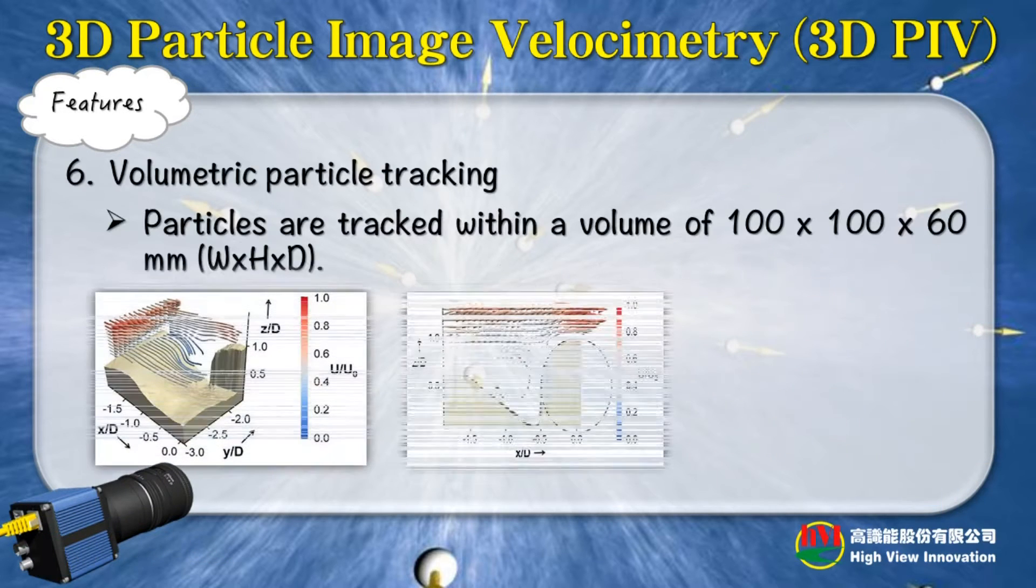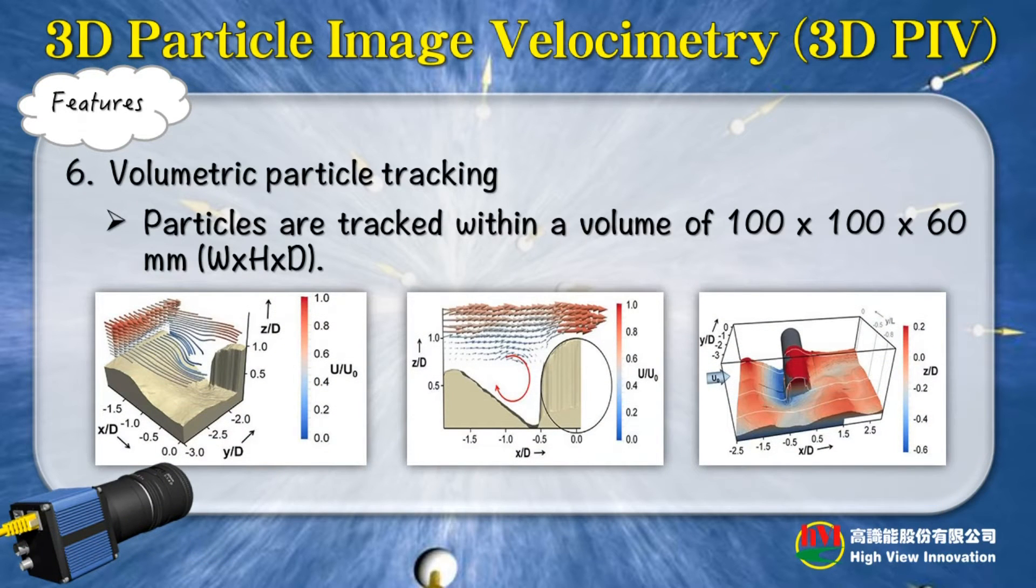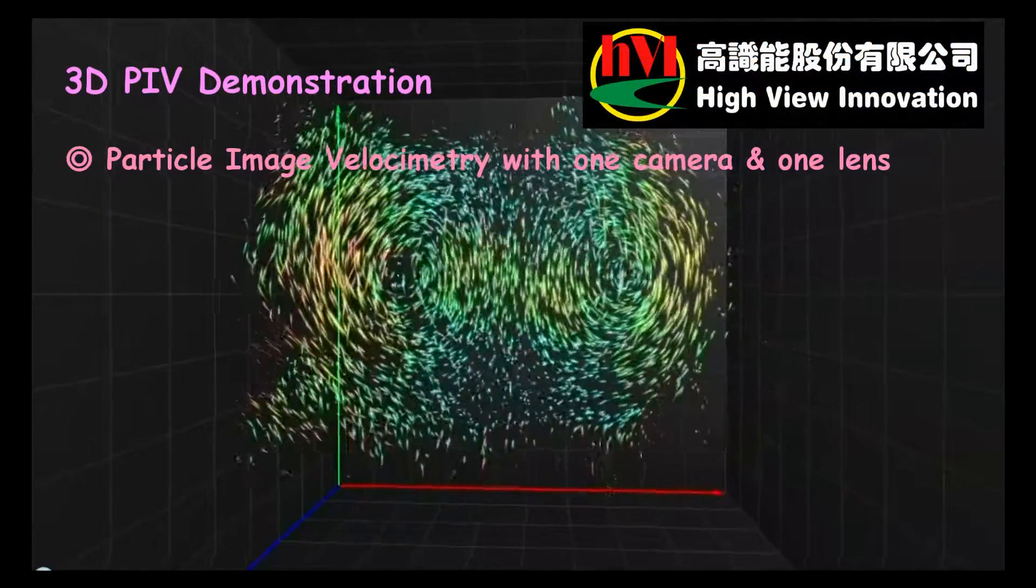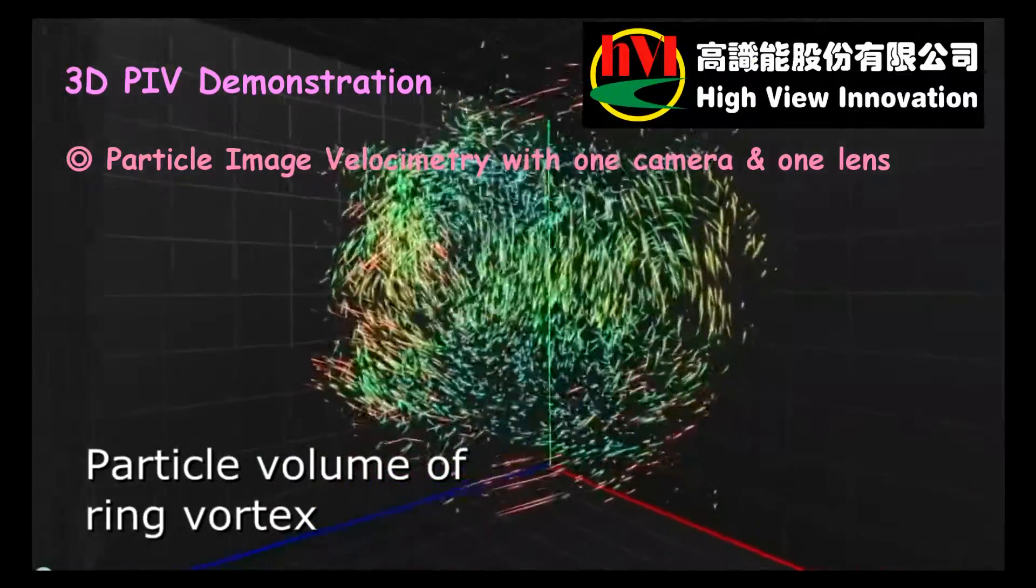Sixth, volumetric particle tracking. Particles are tracked within a volume of 100 by 100 by 60 millimeters. Please see the 3D PIV demonstration.